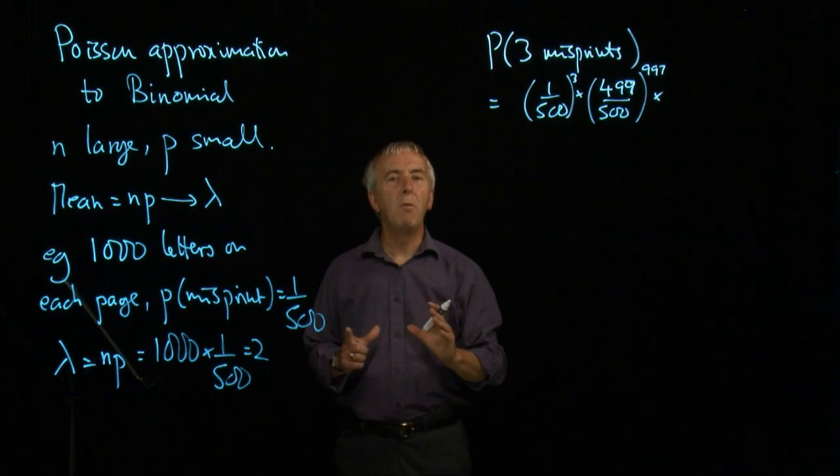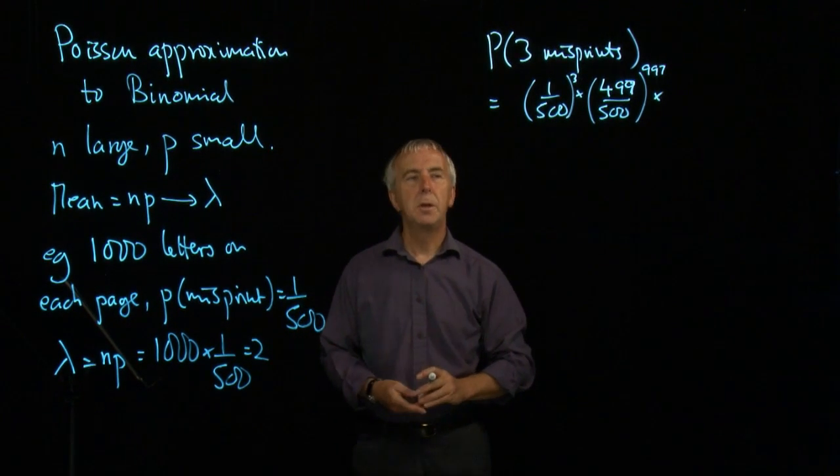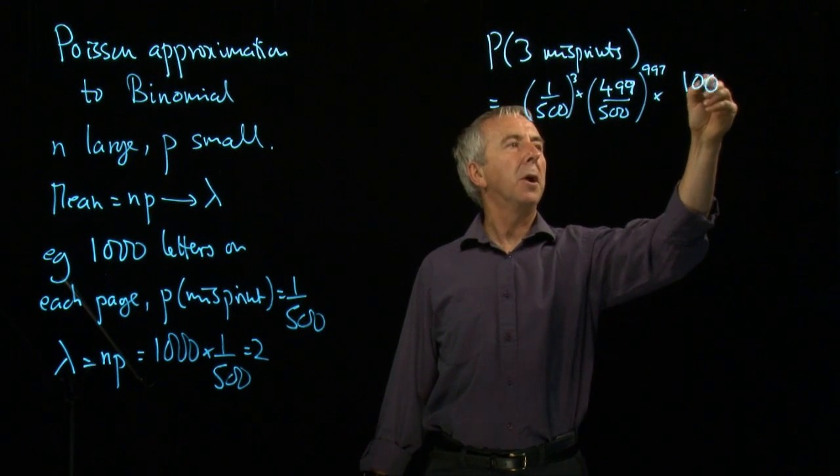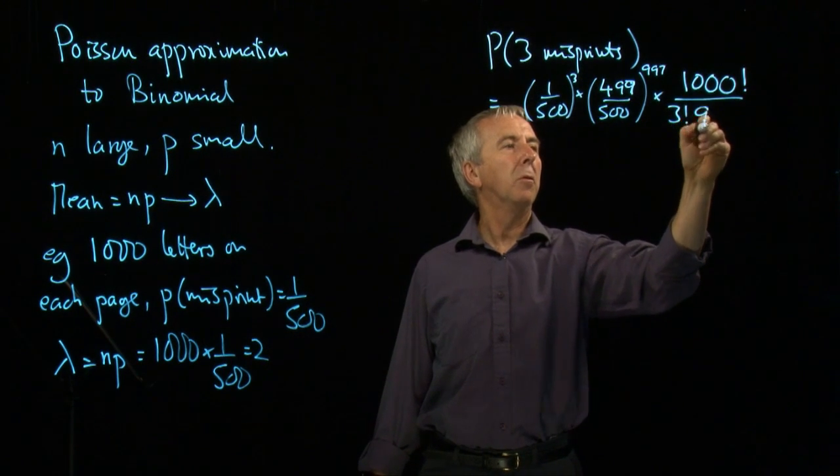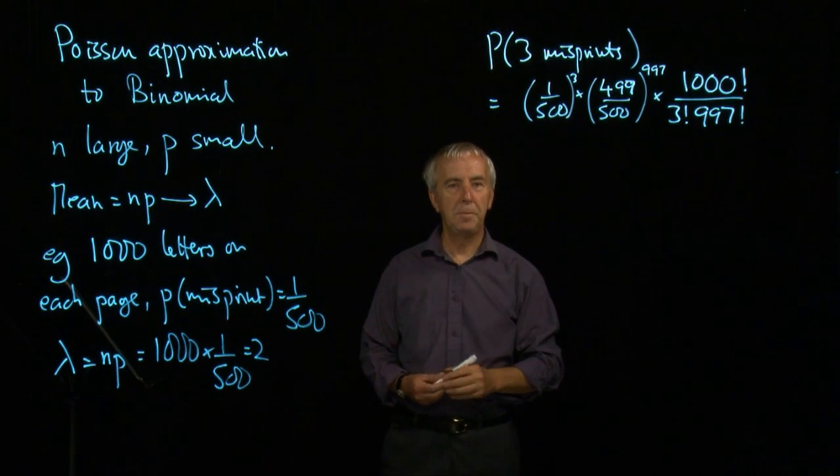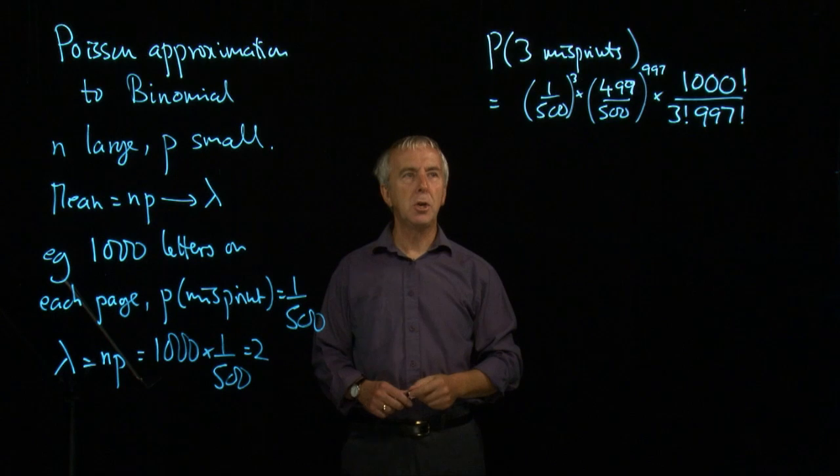And then we have to look at the number of ways in which these three misprints can occur throughout the 1,000 letters. And that's going to be given by the binomial coefficient, 1,000 factorial over 3 factorial times 997 factorial.